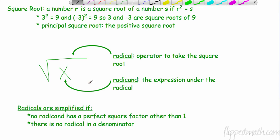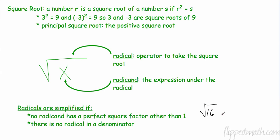The radicand — probably a new term for most of you — is the expression under the radical sign. It can be numbers, variables, or other expressions. Radicals are simplified when two rules are met: no radicand has a perfect square factor other than one, and there is no radical in the denominator.